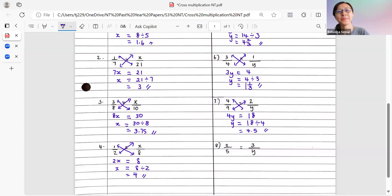Finally, 2 out of 5 equals to 3 out of y. We draw in the diagonals. And we multiply across the diagonals. 2 times y, we have 2y. 5 times 3, we have 15. So y equals to 15 divided by 2. And that gives us 7.5.